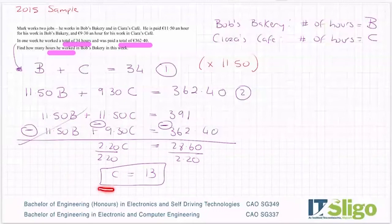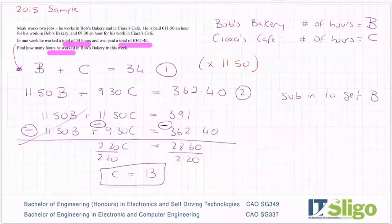Now we know that the number of hours Mark has done in Ciara's cafe is 13. This is obviously the easier equation to sub it into, but you could sub it into either. But I'm going to sub in to get B.